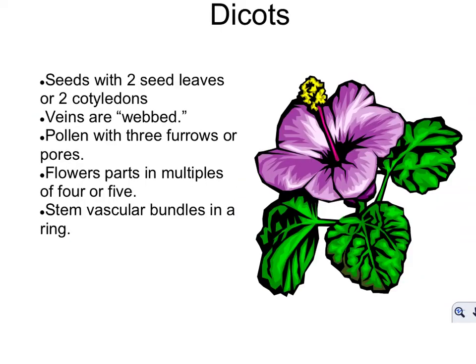Next, you have your dicots. Di means two — think of a disaccharide, two sugars. These are seeds with two seed leaves, or two cotyledons. The veins are webbed instead of scattered. Another way to remember it: your flower parts are in fours or fives. If you have a dicot, it'll give a different answer than a monocot because of the multiples.